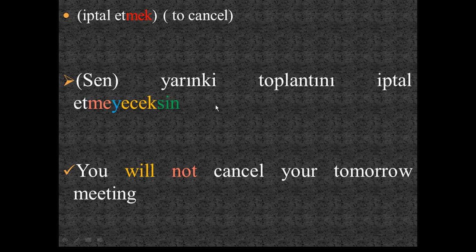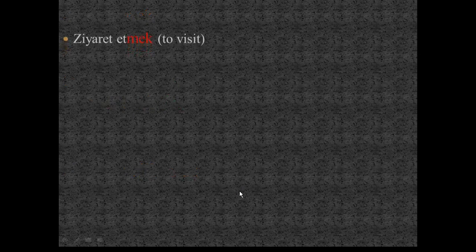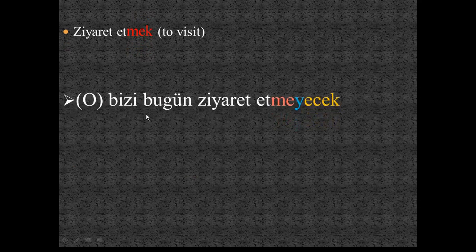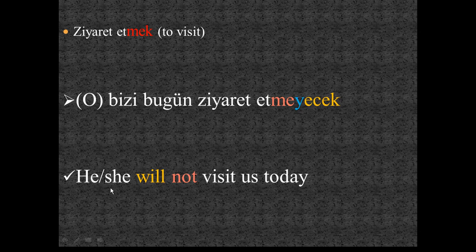More examples: 'Sen yarınki toplantını iptal etmeyeceksin' — you will not cancel your meeting tomorrow. 'Iptal etmeyeceksin' = will not cancel. Next: 'O bizi bugün ziyaret etmeyecek' — he/she will not visit us today. 'Ziyaret etmeyecek' = will not visit.